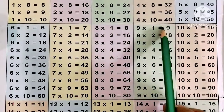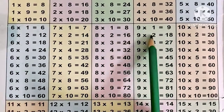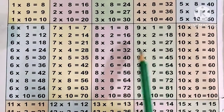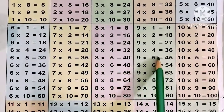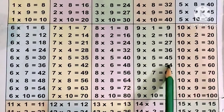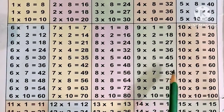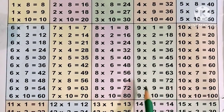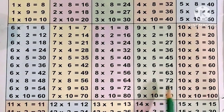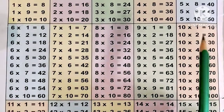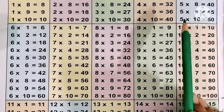Now the 9 times table. 9 ones are 9, 9 twos are 18, 9 threes are 27, 9 fours are 36, 9 fives are 45, 9 sixes are 54, 9 sevens are 63, 9 eights are 72, 9 nines are 81, 9 tens are 90.